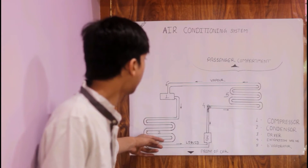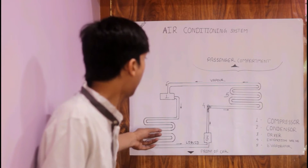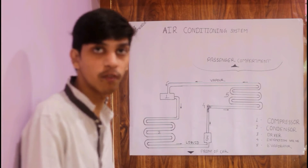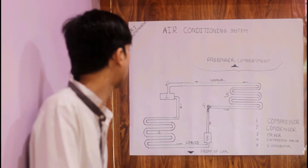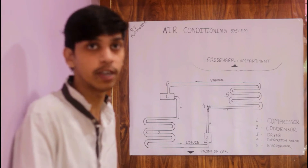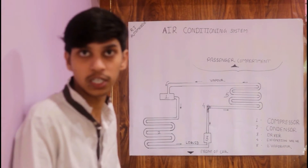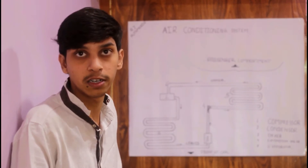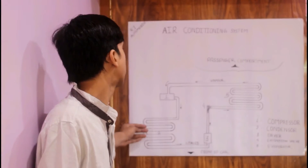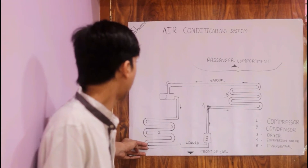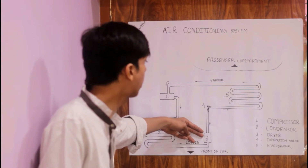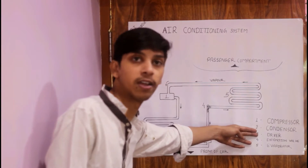In the condenser, the high pressure and high temperature vapor is condensed. The refrigerant comes into the condenser and a phase change takes place — the high pressure and temperature vapor is condensed and changes its phase into a liquid with high pressure and temperature. This high pressure and temperature liquid then goes to the third portion, which is the dryer.